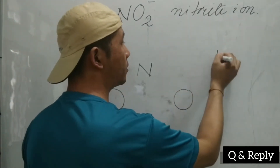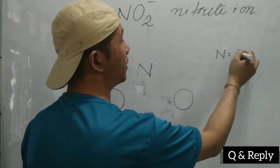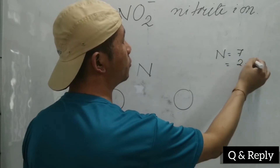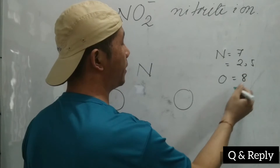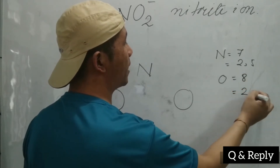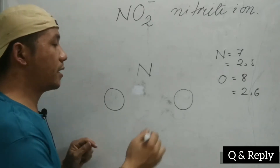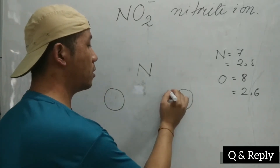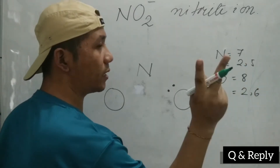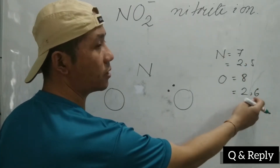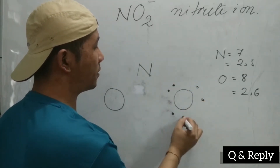As we know, nitrogen has the atomic number seven — its electron configuration is 2, 5 — so it has five valence electrons. And oxygen has atomic number eight — its configuration is 2, 6 — meaning six valence electrons. In this case, oxygen wants to get octet configuration by getting two electrons in its outermost shell, because it already has six electrons.